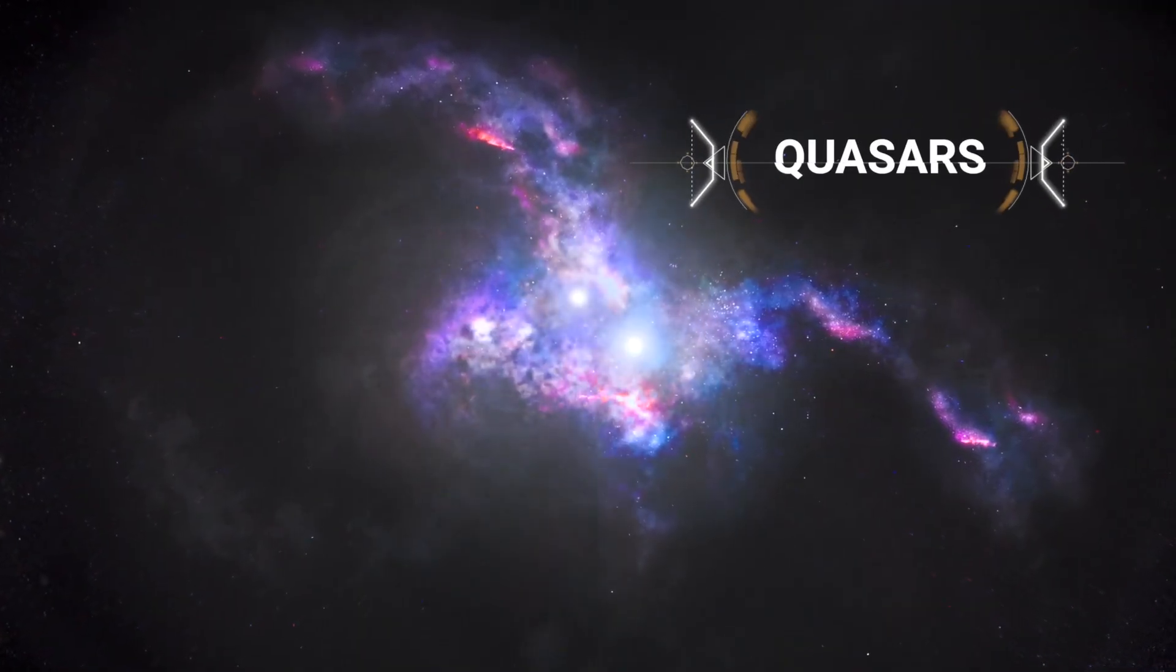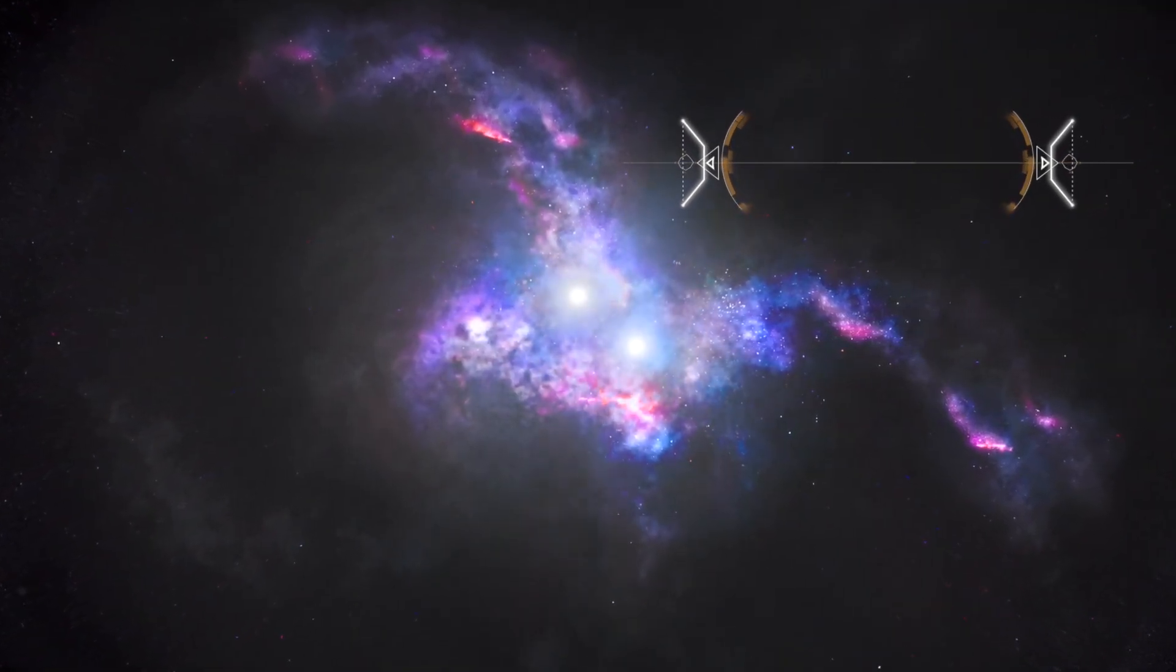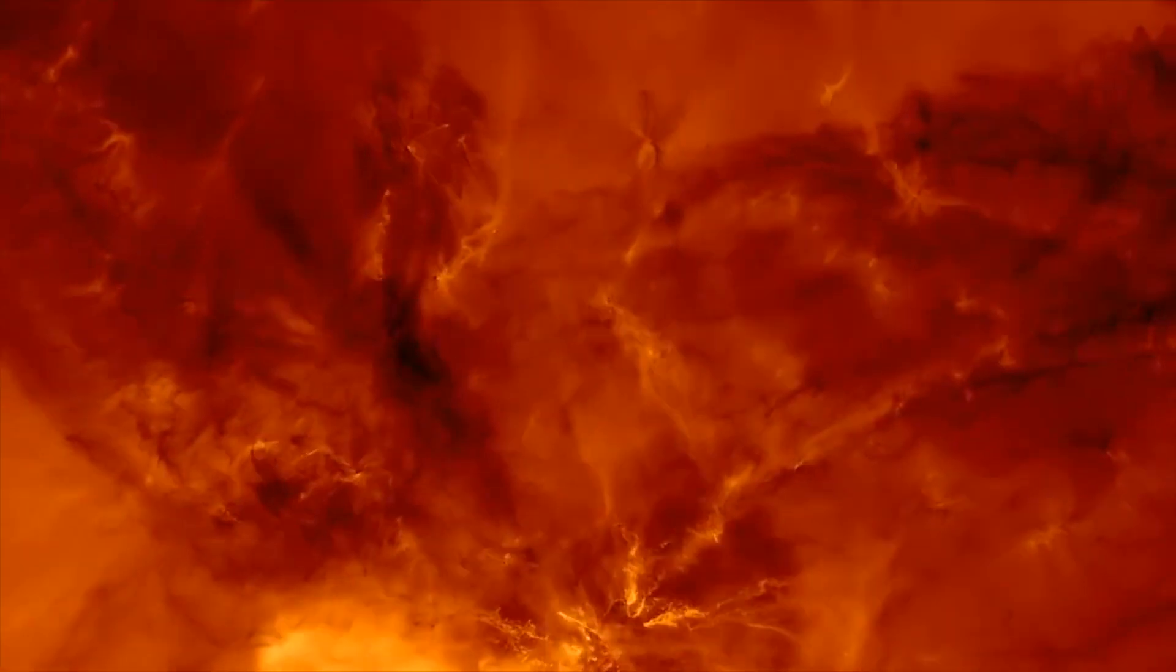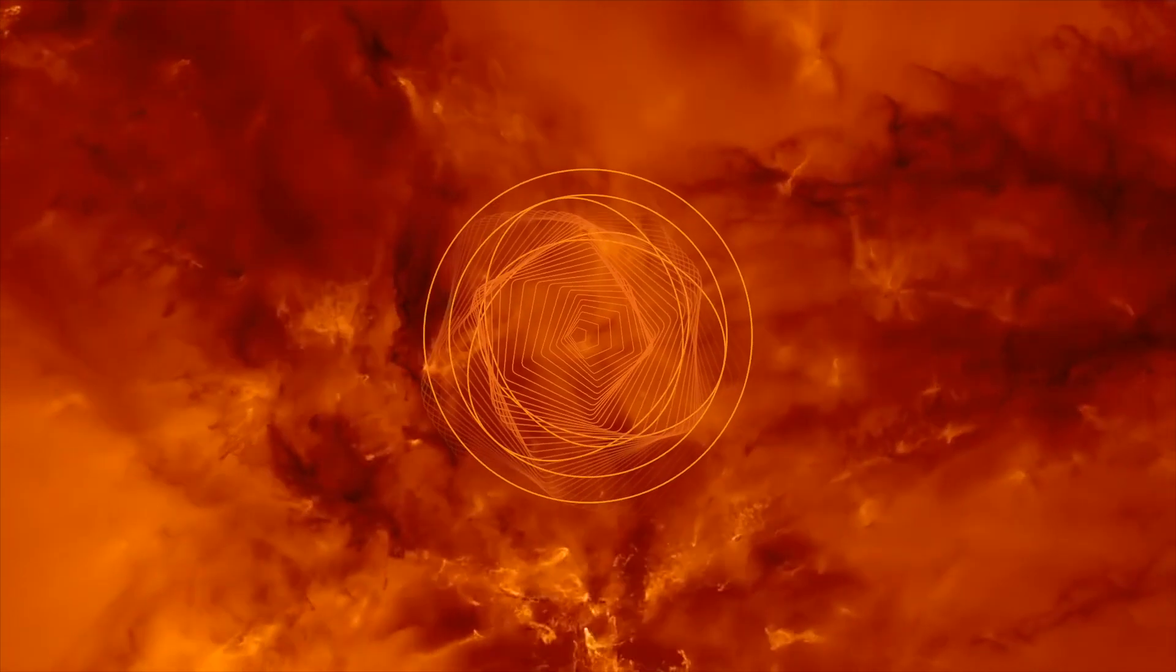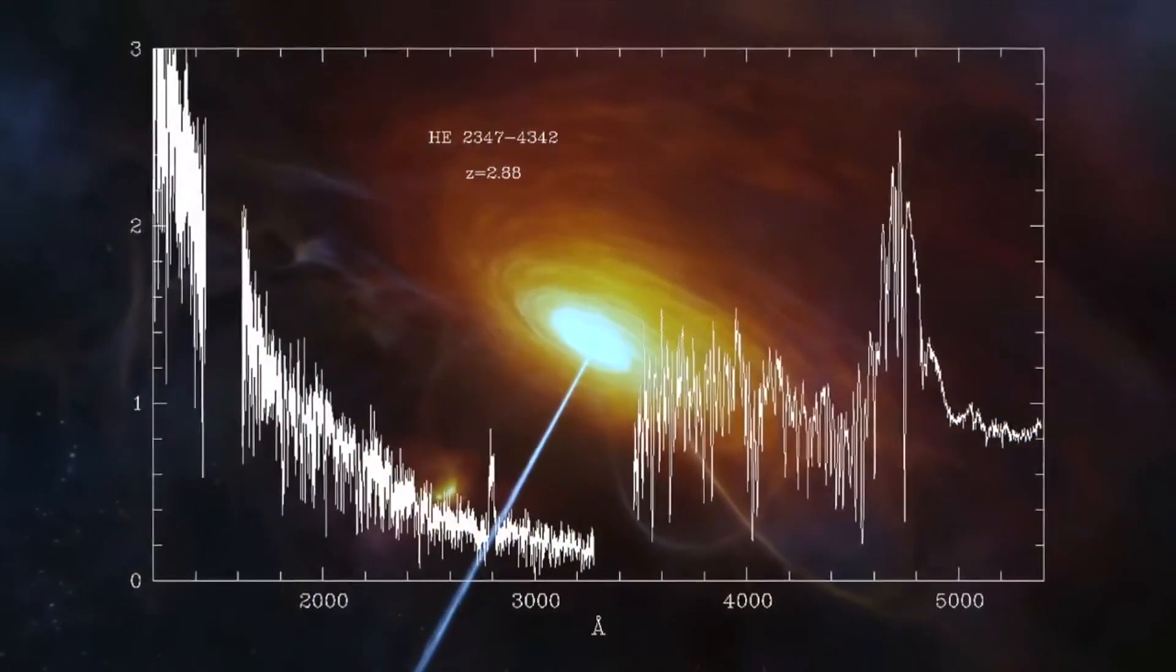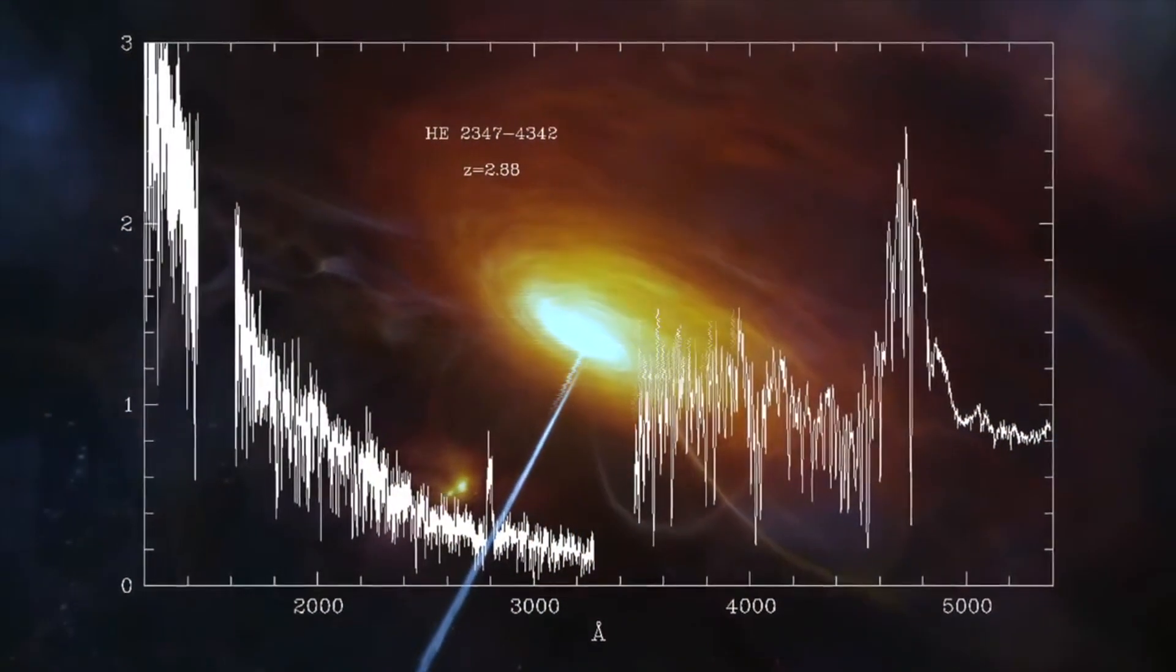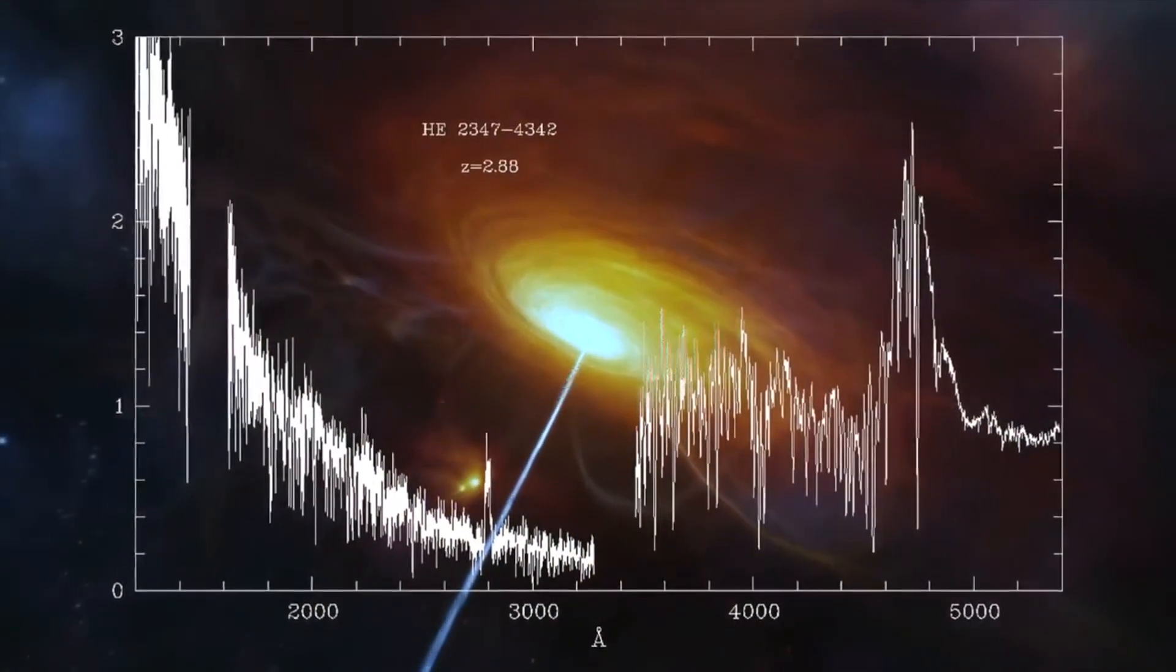Quasars are formed when enough gas and matter surround the black hole to form an accretion disk. The matter in the accretion disk falls into the black hole, and as it does, it heats up to incredible temperatures and releases large amounts of radiation. When enough matter and radiation are present, the quasar can ignite, sending massive jets of energy from the poles of the supermassive black hole out into space.